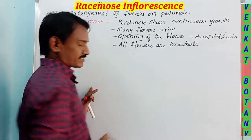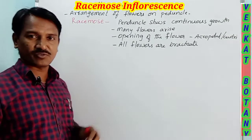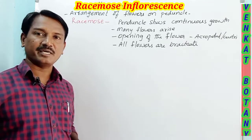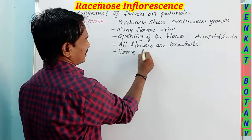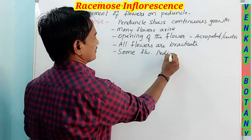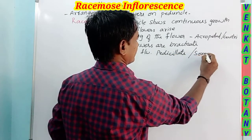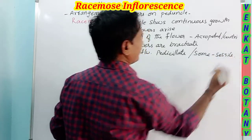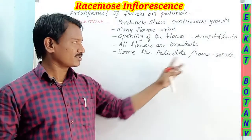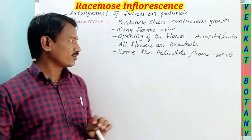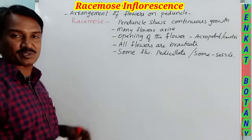All flowers are bracteate in racemose inflorescence. Some flowers are sessile and some flowers are pedicellate. Sessile means the pedicel is absent. Opening of the flower is in acropetal or centripetal manner.